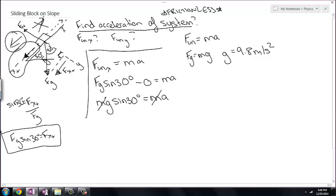Masses cancel out because they're on both sides. I have now 9.8 meters per second squared times the sine of 30 degrees is equal to the acceleration.